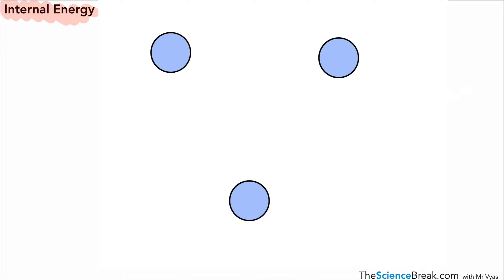The second part is to do with the particles and the forces of attraction between those particles, as shown by those red lines. Because of those forces of attraction, we have potential energy in the particles due to their position compared to each other.